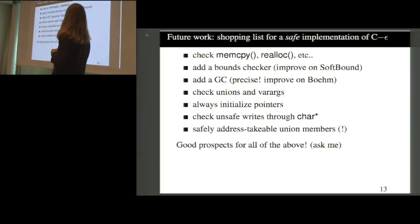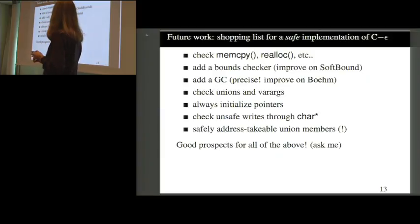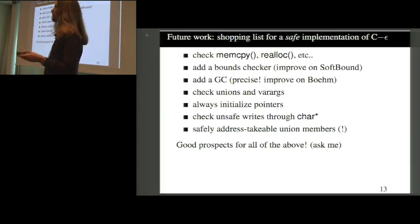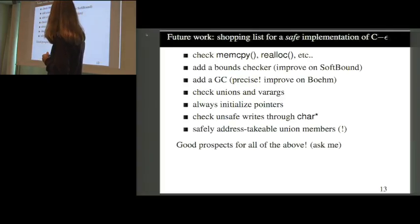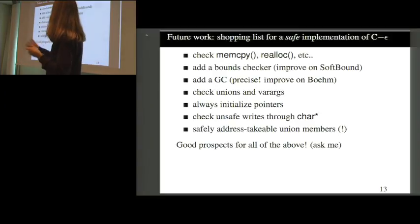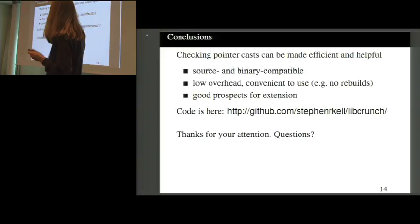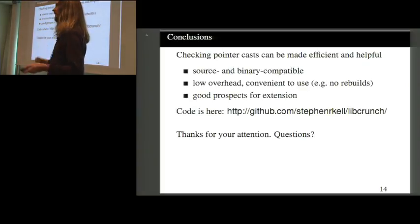If we have runtime type information even in C code, can we build a completely safe implementation close to real C — closer than things like CCured or Cyclone? I believe yes. There's a shopping list of additions: checking memcpy respects destination types, bounds checking, temporal memory safety via garbage collection, better handling of unions and varargs, and initialization checking. Checking pointer casts in unsafe code can be helpful and done efficiently, with source and binary compatibility, low overhead, and convenient usage. There's code on GitHub. Thank you.